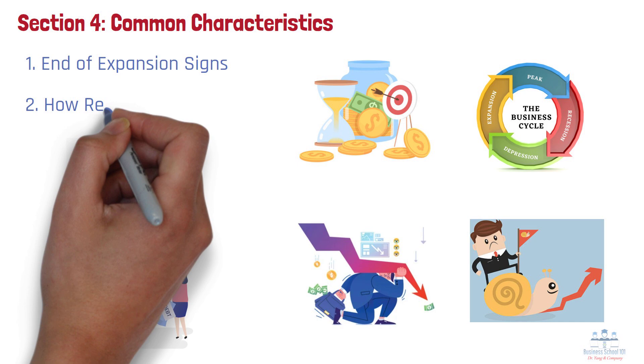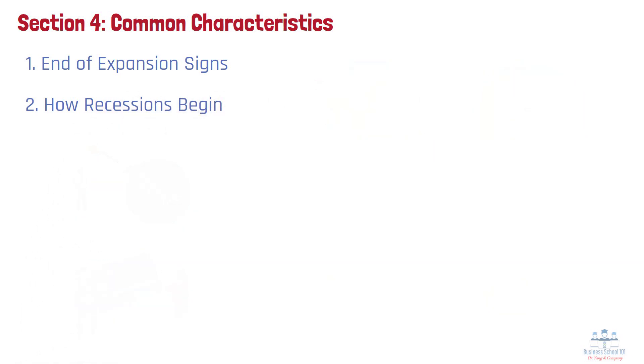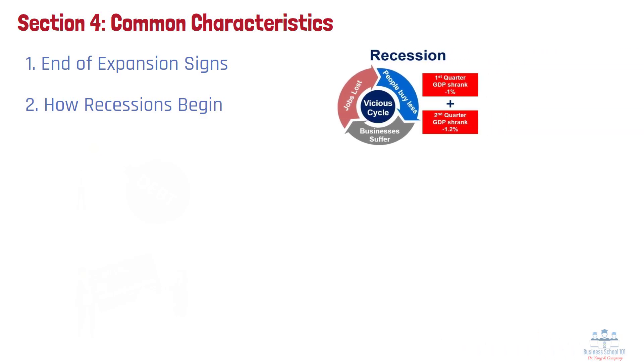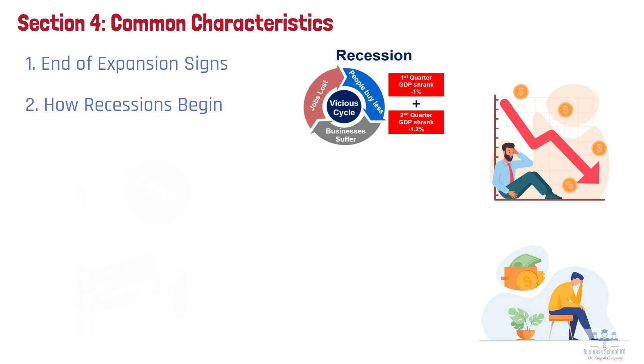Number 2: How Recessions Begin. Recessions often kick off when businesses pull back on big purchases like machinery, equipment, or new factories, or when households stop spending on things like cars and furniture. When spending drops, companies see their sales shrink, so they cut production and start laying off workers. That creates a ripple effect: higher unemployment, lower incomes, and even less spending.